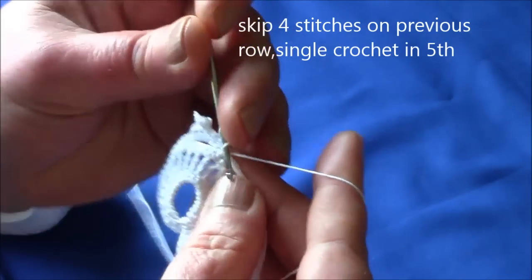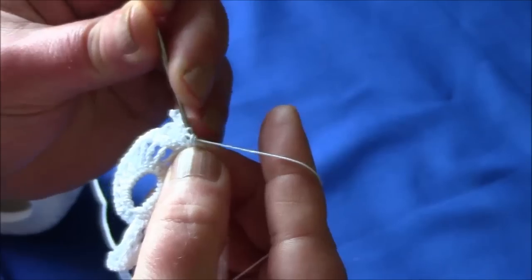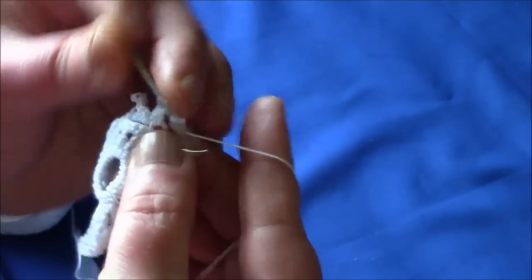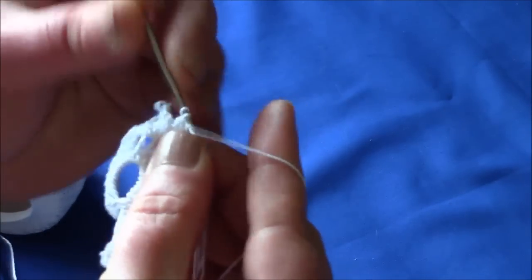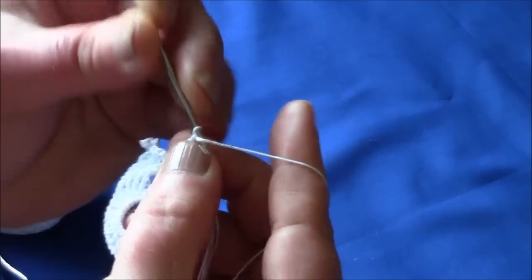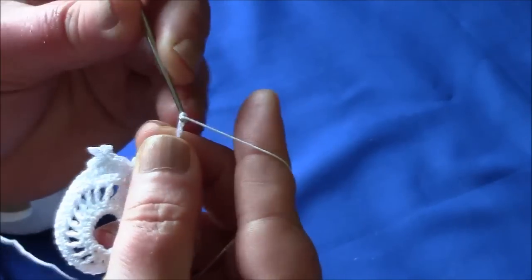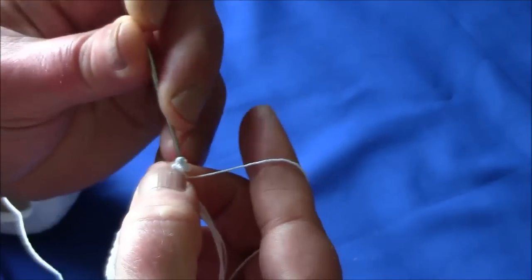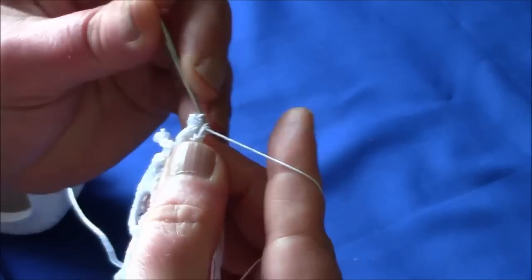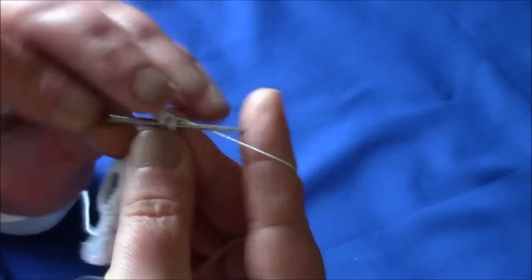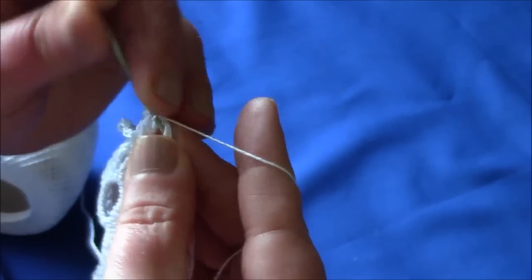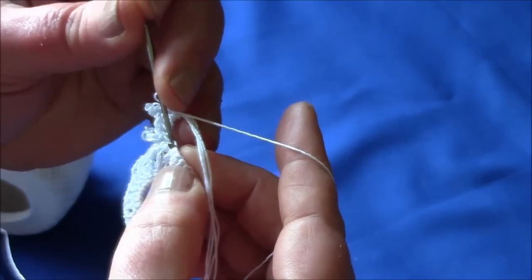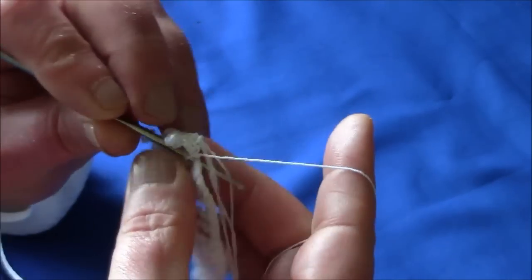Again now three double crochet over cord alone. Chain five, one, two, three, four, five, a slip stitch in the base. Three double crochet, one, two, three. Count four on the previous row, one, two, three, four and a single crochet into the fifth.